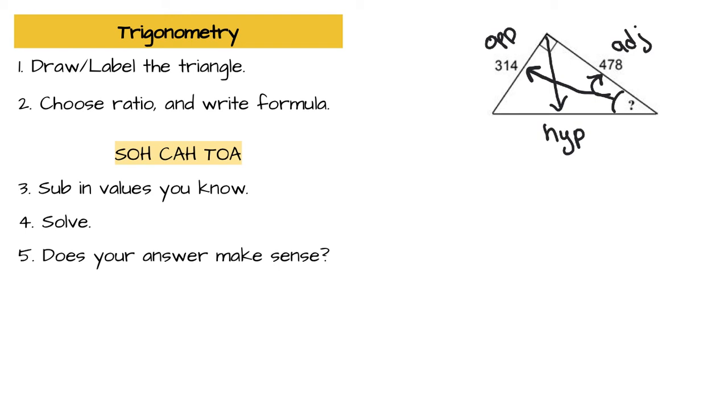Since we're dealing with opposite and adjacent in this situation, we're going to be using our tan ratio again. Tan theta, and we're using theta because we don't know the angle, is equal to opposite over adjacent. And now we're going to fill in what we know. Tan theta is equal to 314 over 478.